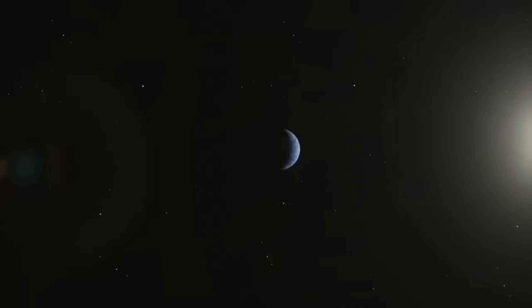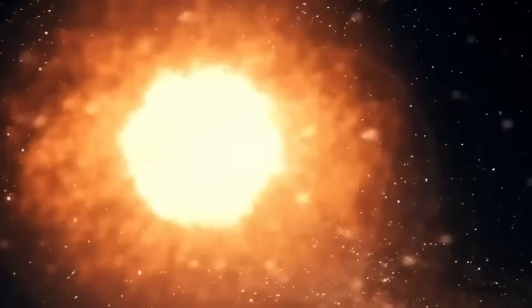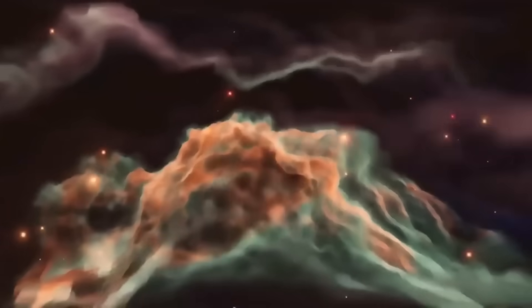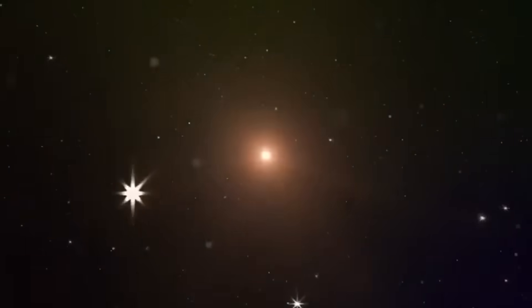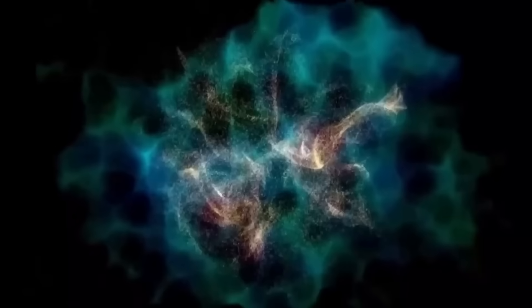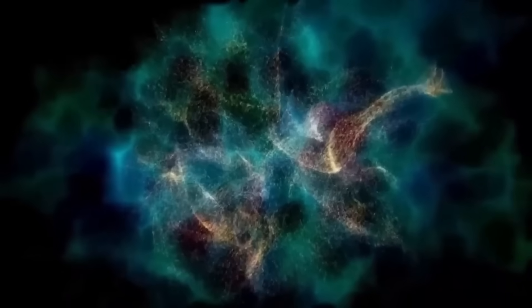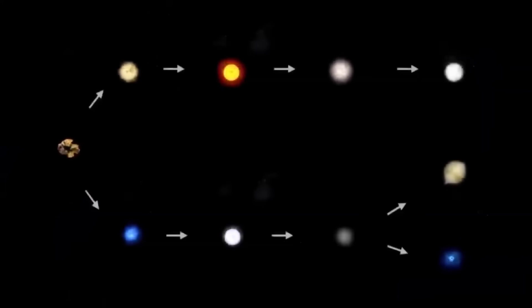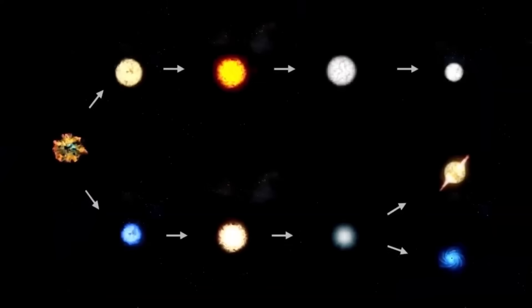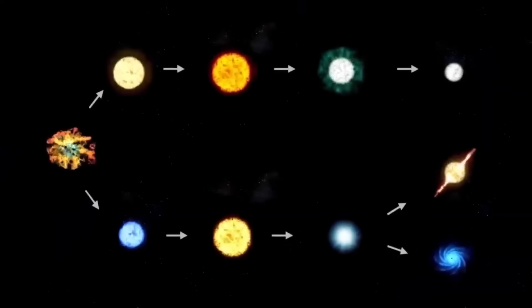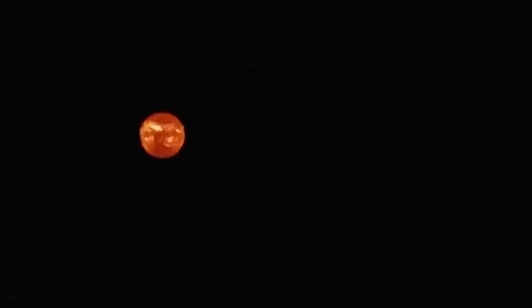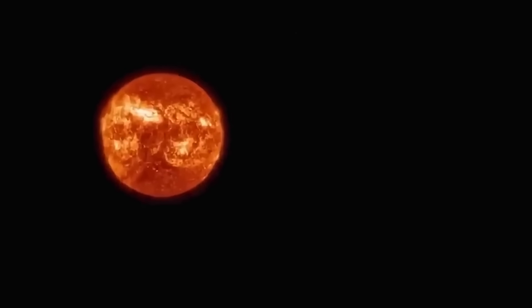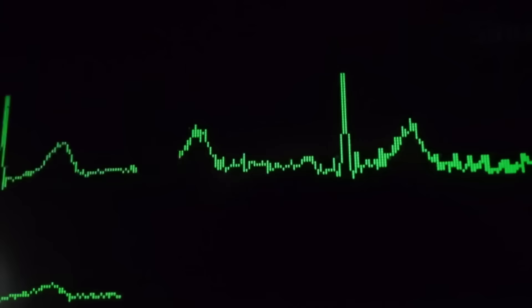Here's the thing, when we observe stars, we're not actually seeing them as they are in the present moment. The light we see from stars like Betelgeuse takes time to travel to Earth. Betelgeuse, one of the most fascinating stars in our night sky, is located approximately 725 light years away from Earth. This means that the light we observe from it today actually began its journey toward us around 725 years ago. In other words, when we look at Betelgeuse through telescopes or even with the naked eye, we are witnessing the star as it was centuries ago, not as it exists in the present moment.